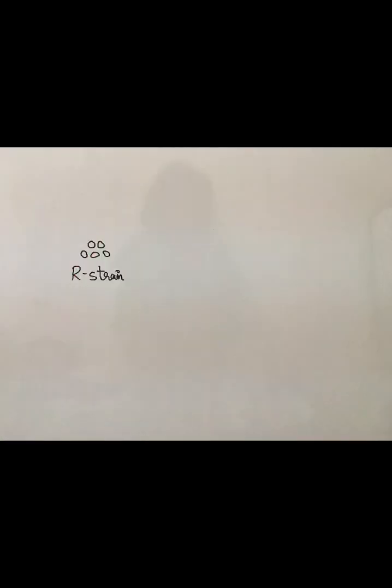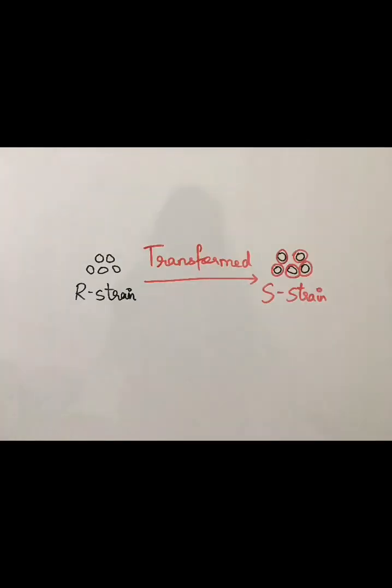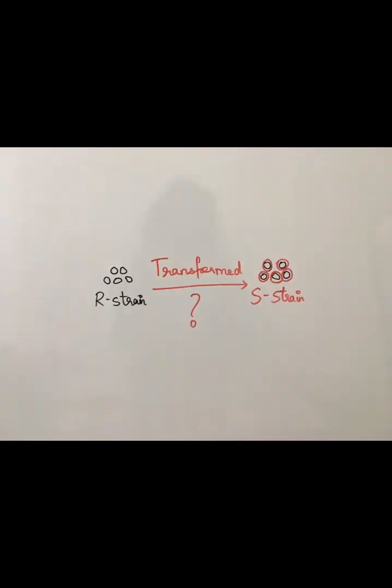He later extracted the live S and R-strain from the dead mouse. He concluded that the live R-strain had transformed into the live S-strain, maybe due to the genetic material that was passed from the S-strain to the R-strain, converting the R also into the S-strain. But what really transformed was not clear.